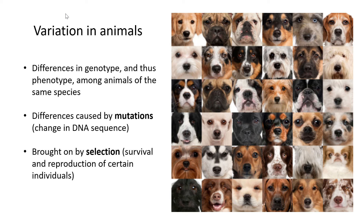In this lesson we're going to look at what makes animals different. What we call this is variation. Usually within one species there is a giant variation of different types — we see different phenotypes within one species. Here we have a big collection of pictures of the dog. The dog is the species but we see hundreds of different breeds within the one species.